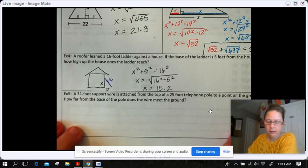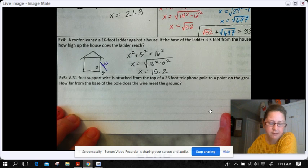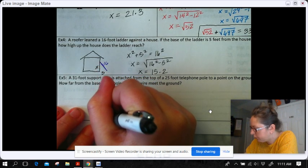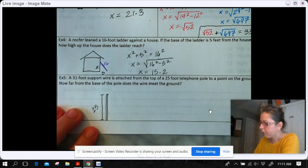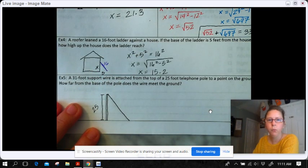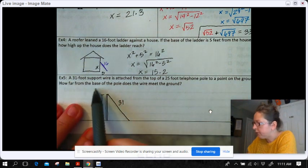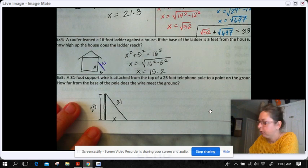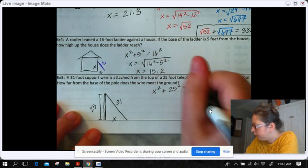Let's do another one. A 31 foot support wire is attached from the top of a 25 foot telephone pole. So here's my telephone pole. I know that it is 25 units high. And then they're going to attach this wire to the top of it. There's the wire, and they told me that the wire is 31 feet. They want to know how far from the base of the pole does the wire meet the ground. So they want me to solve for this side.